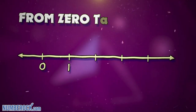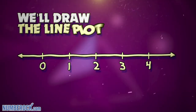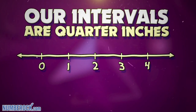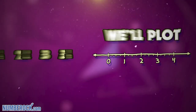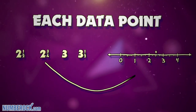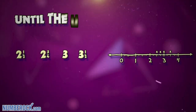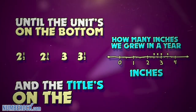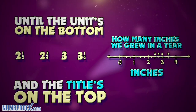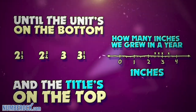From zero to four inches we'll draw the line plot. Our intervals are quarter inches, each is given a spot. We'll plot each data point and we won't stop until the units on the bottom and the titles on the top.